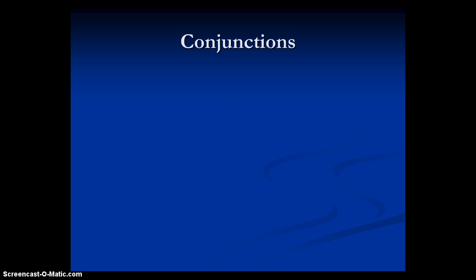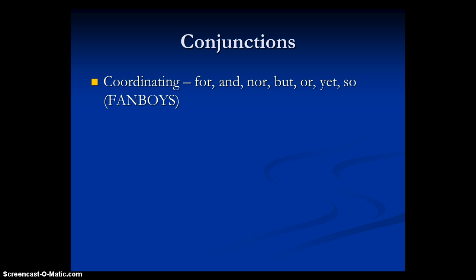Moving on, we have conjunctions — words you'll come across quite often in your writing and reading. There are different types. One is called coordinating conjunctions, and a useful tool to remember the seven is the word FANBOYS, where each letter stands for one: for, and, nor, but, or, yet, and so. When you have two shorter sentences and want to make one longer sentence, use a coordinating conjunction in the middle to put them together.